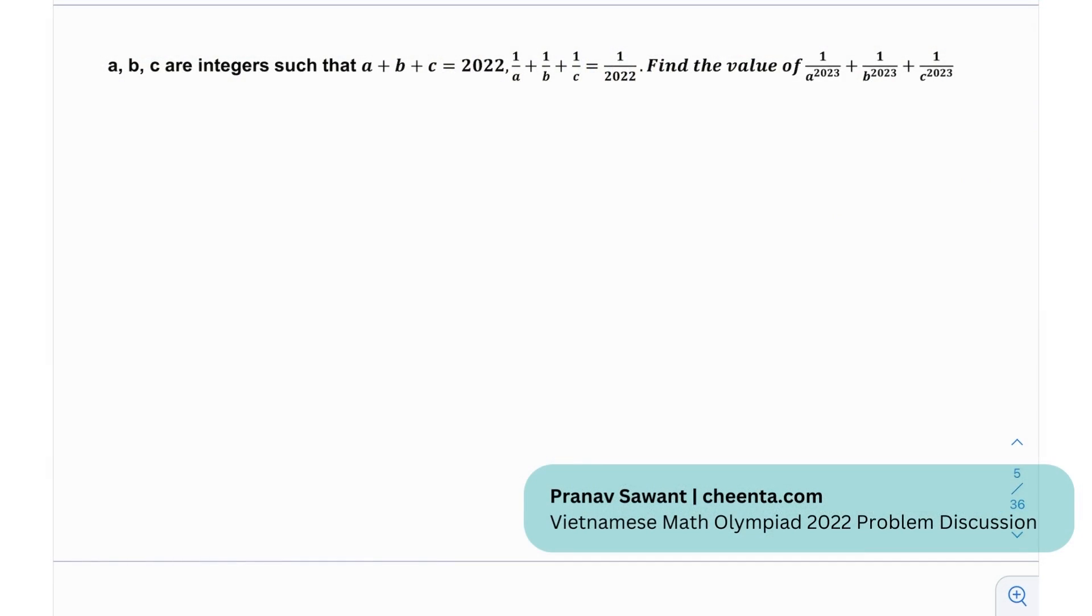Okay, so the question says that let a, b, c are integers such that a plus b plus c is 2022, 1/a plus 1/b plus 1/c is 1/2022 and they're asking us to find the value of this quantity. So, okay, they have given us a plus b plus c equals 22 which is equal to 1/a plus 1/b plus 1/c.